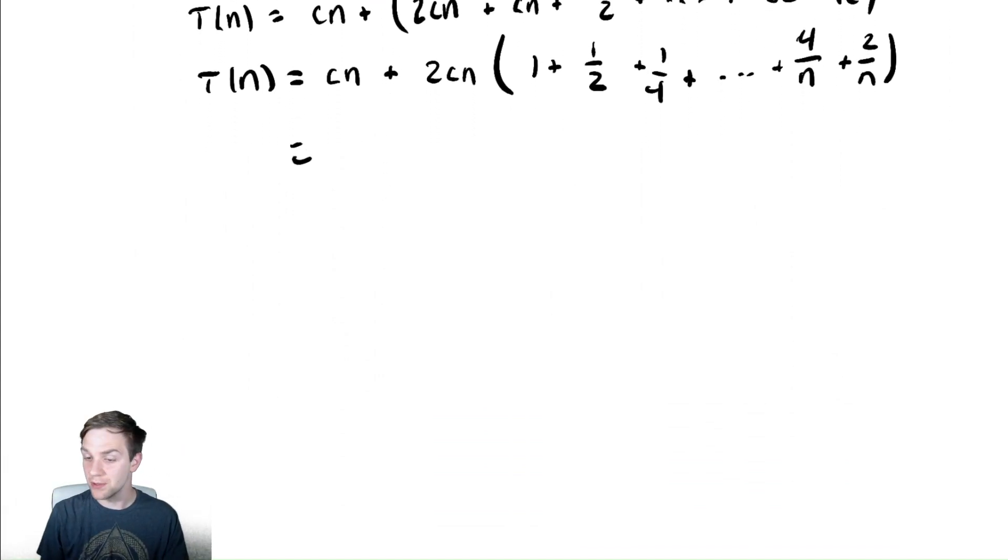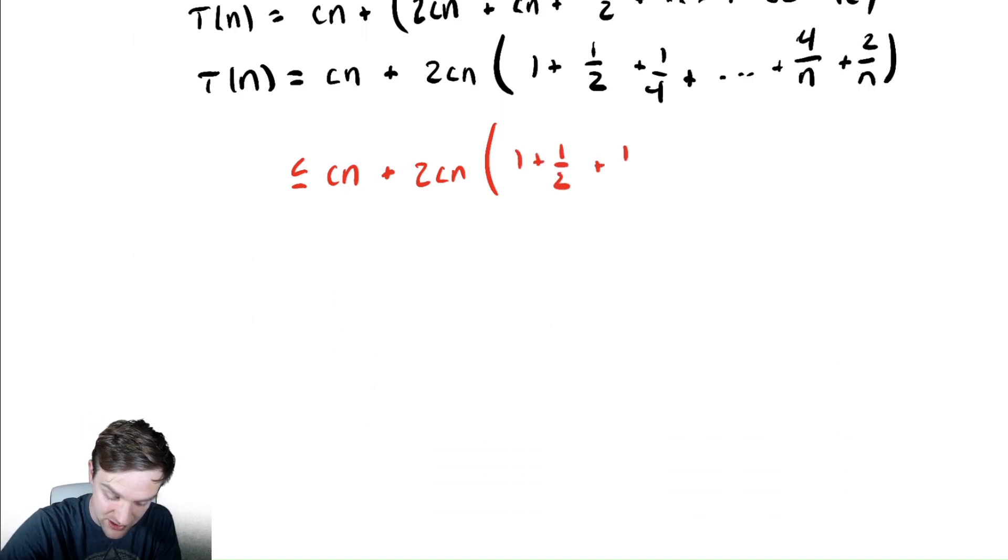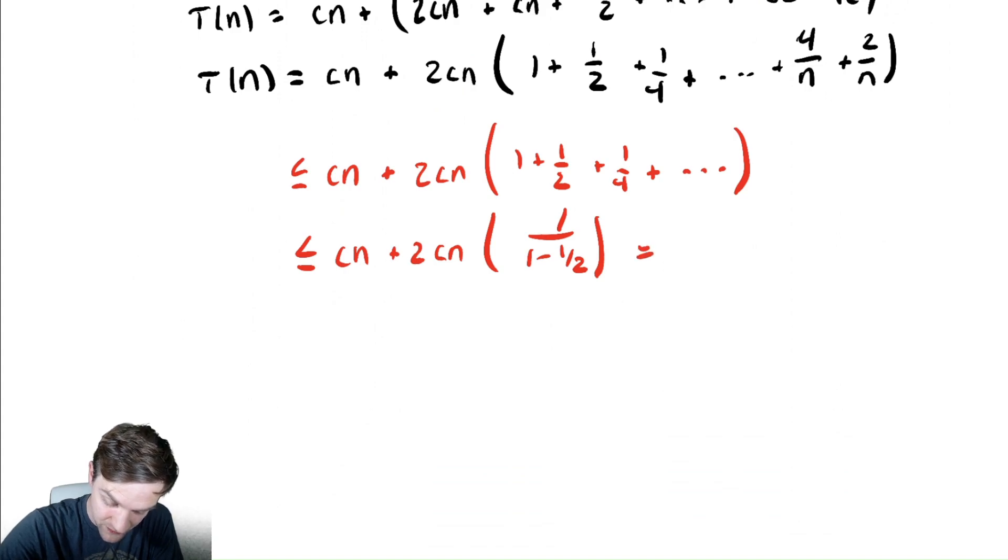So this is equal to, hmm, not easy to say what's equal to, but we can start bounding this, everybody's favorite. So we bound this above. It is less than or equal to c n plus two c n. That is a decreasing geometric summation. We bound decreasing geometric summations above with an infinite geometric series with the same ratios. So we have one plus a half plus a fourth plus infinitely many terms there. We've seen that exact summation several times, and hopefully we can now identify that it is equal to one over one minus a half, which is just two. So this is equal to c n plus four c n, which is five c n.